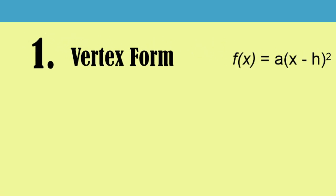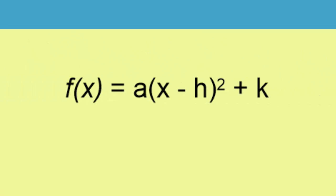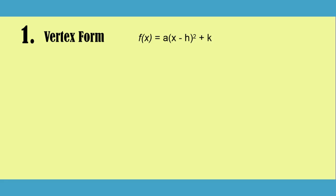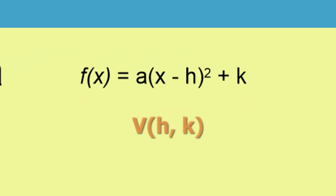The first is vertex form. It's written as f(x) equals a(x - h)² + k. One of the biggest advantages to being in vertex form is that we can find the vertex. The vertex is very useful. It's helpful in graphing and determining whether or not we have a minimum or a maximum value. The vertex can be found by looking at the h and k values in our function.